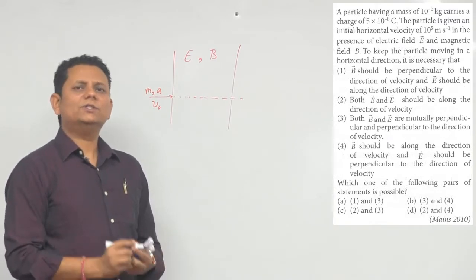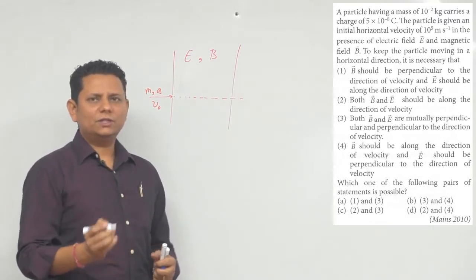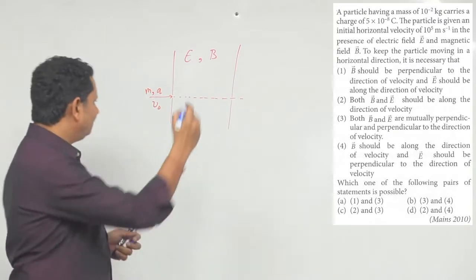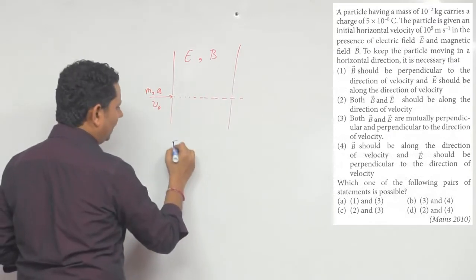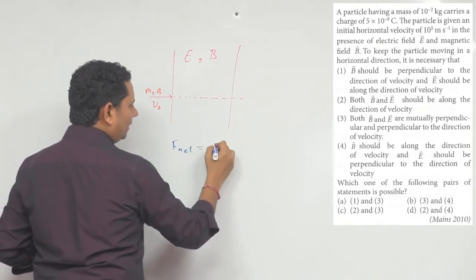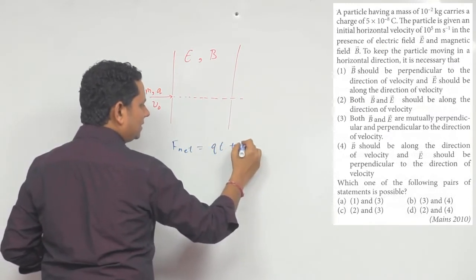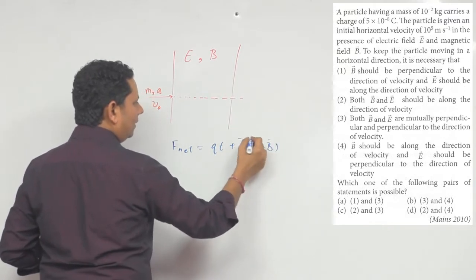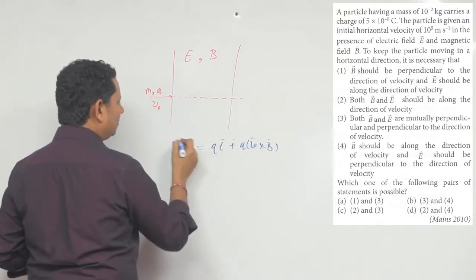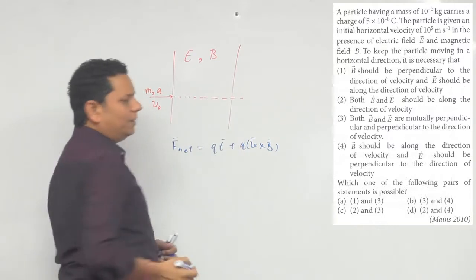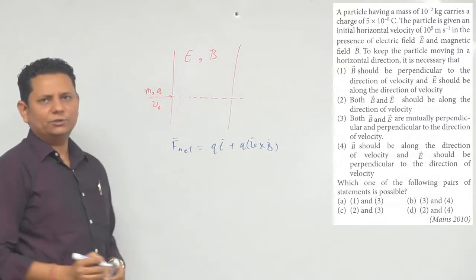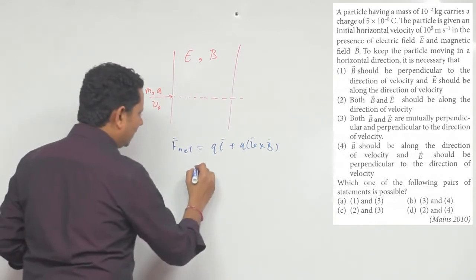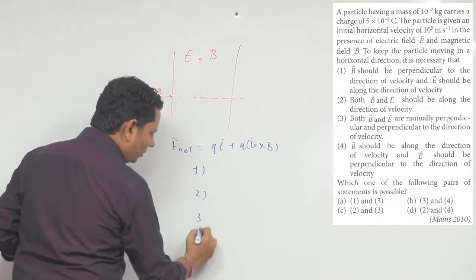इस case में Lorentz force को 0 नहीं करना है — Lorentz force की value हो सकती है। Net force 0 हो, ऐसा जरूरी नहीं है। Net force (Lorentz force) को हम लिखते हैं: F = qE + q(v × B)। यह किसी भी charged particle पर, जिस पर electric और magnetic field दोनों लगी हों, का net force होता है। चारों options को consider करके check करते हैं।